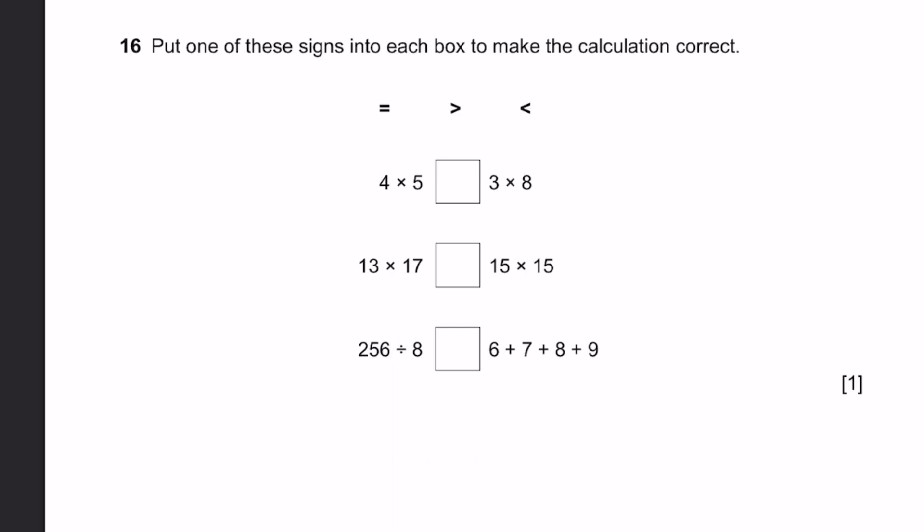Question 16. Put one of these signs into each box to make the calculation correct. Equals, greater than, or less than. 4 times 6 is less than 3 times 8. 20 is less than 24. 13 times 17 is less than 15 times 15. This is 221, and this is 225. That's why this is larger. 256 divided by 8 is greater than 6 plus 7 plus 8 plus 9. 256 divided by 8 is 32. 6 plus 7 plus 8 plus 9 is 30. And 32 is greater than 30.